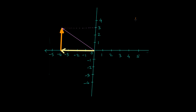Our basic vector is î. If î gets multiplied by 4, we get a vector pointing in the positive x-direction, which is not what we want. To flip the direction, we multiply by minus 1 — the moment it gets multiplied by minus 1, the direction flips to the negative x-direction. The length remains 4 units. So this vector is nothing but -4î.